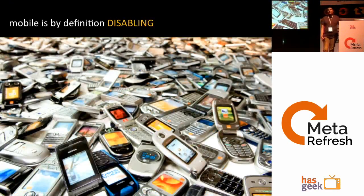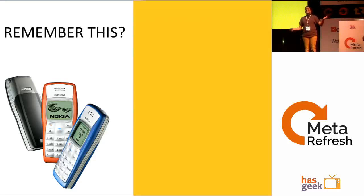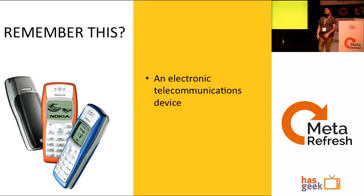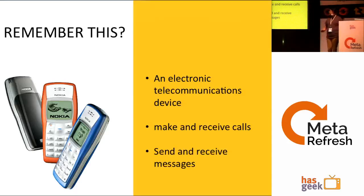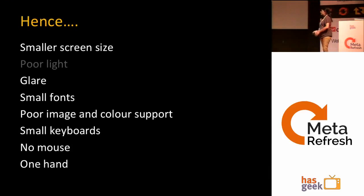How is mobile disabling? Remember one of the oldest phones? Mobile was and is supposed to be an electronic telecommunication device — its purpose is to make and receive calls and send messages. That is why it has a small screen, poor light, and small fonts. These are some of the things that make it disabling.